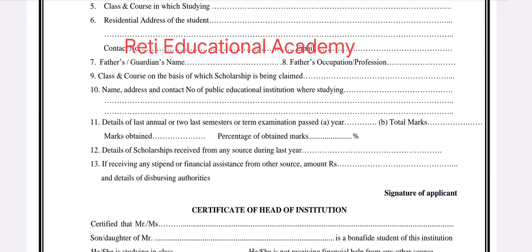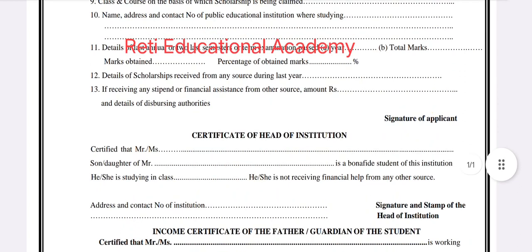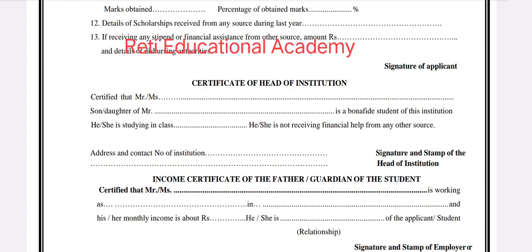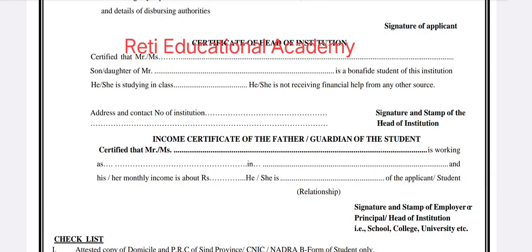Number 12 is the details of any scholarship received from other sources during the last year. After completing the form, include the address and contact number of your institution. Also attach the income certificate of the parent or guardian of the student, signed and stamped by the head of your school, college, or university.